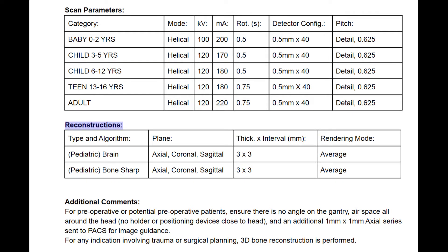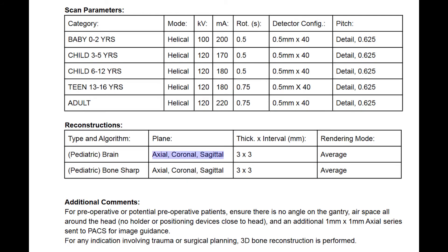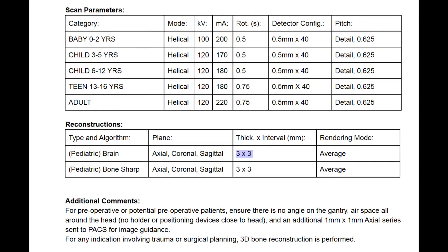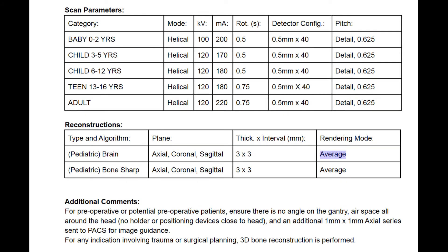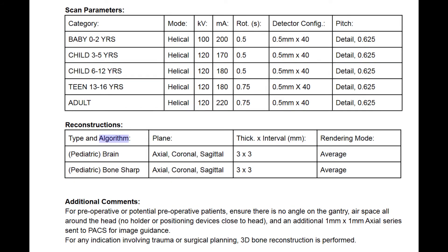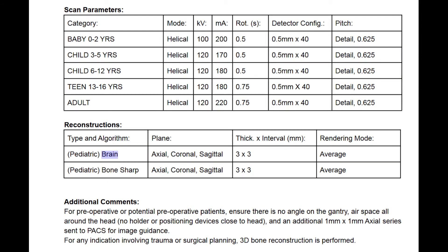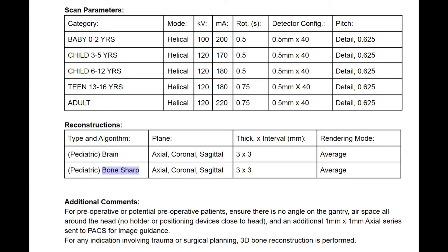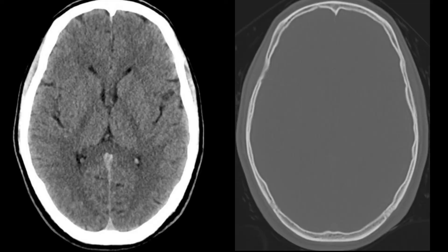Moving down to the reconstructions, we're not sending those 0.5 millimeter slices to PACS. We're going to send three planes — axial, coronal, and sagittal — with three millimeter slices at three millimeter intervals, so three by three. They're rendered using volume averaging, so each three millimeter cubic voxel represents the average measured density in that area. We process this with two different filters, or kernels: a brain filter, which is relatively smooth to reduce noise and improve contrast resolution for grey and white matter differentiation; and a sharp bone filter, which improves spatial resolution to highlight tiny fractures or inconsistencies in the bone and show those tiny ossicles in the inner ear. The raw data goes through two different processing algorithms and the image data is built into axial, coronal, and sagittal planes before being sent to PACS.